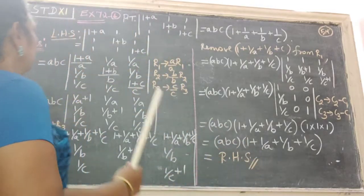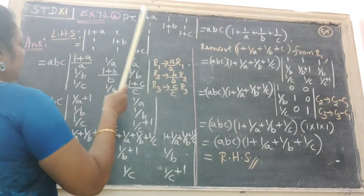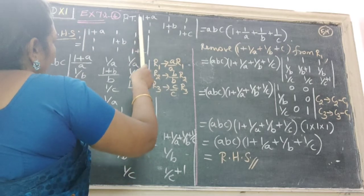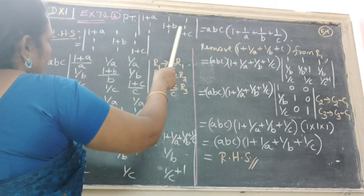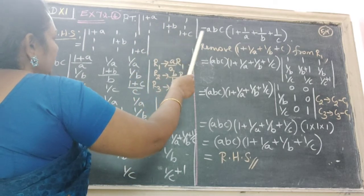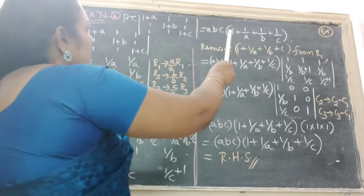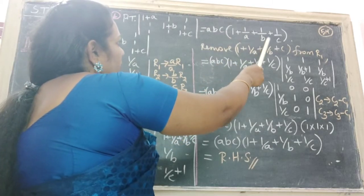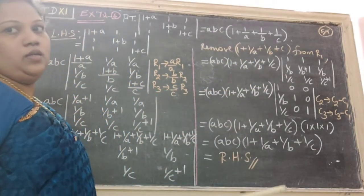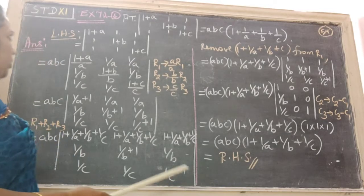Next, 5 more questions. XI 7.2 4th sum. Prove the determinant |1+A, 1, 1; 1, 1+B, 1; 1, 1, 1+C| equals ABC(1 + 1/A + 1/B + 1/C). This is a very important repeated question.